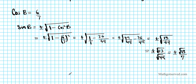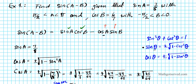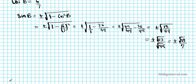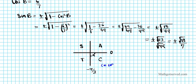To determine the sign, we look at the constraints: B is between negative pi over 2 and 0, which places B in quadrant 4. Using the ASTC rule, in quadrant 4 cosine is positive and sine is negative. Therefore sine B equals negative root 13 over 7.